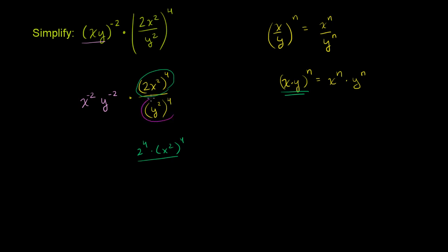And in the denominator, we have y squared to the fourth power. We know that if we have x to the n and then raise that to the m power, this is the same thing as x to the n times m. So y squared raised to the fourth power is going to equal y to the 2 times 4 power, or y to the eighth power.